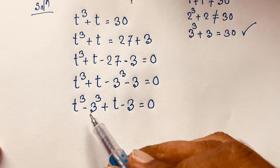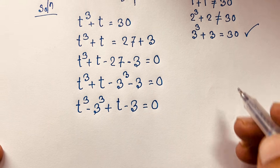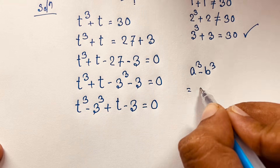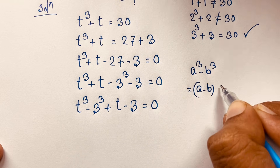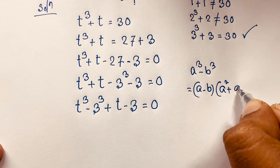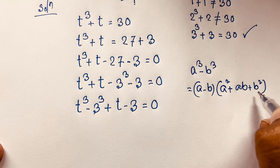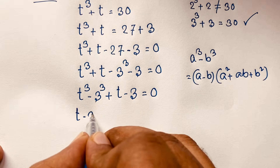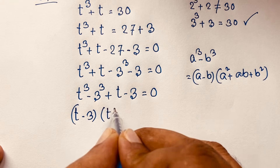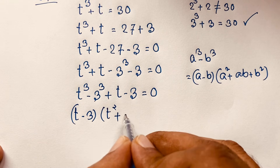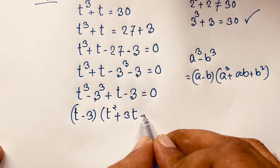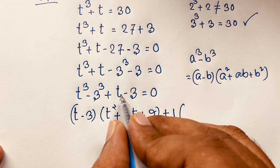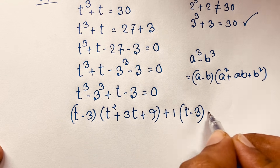Now I apply the math formula a cubed minus b cubed, which equals (a minus b)(a squared plus ab plus b squared). Applying this formula, t cubed minus 3 cubed becomes (t minus 3)(t squared plus 3t plus 9). Then the remaining term plus t minus 3 gives a common factor. So (t minus 3) is common, and this simplifies so that t minus 3 equals 0.